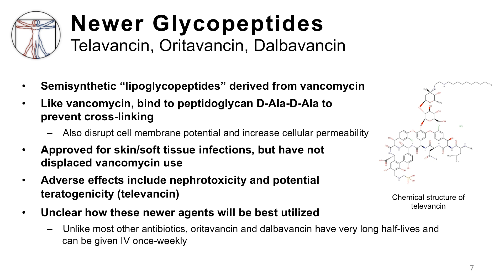They are semi-synthetic agents derived from vancomycin. Like vancomycin, they bind to the peptidoglycan D-ala-D-ala to prevent cross-linking of the peptidoglycan chains. They also disrupt cell membrane potential and increase cellular permeability. These agents are approved for skin and soft tissue infections but have not displaced vancomycin use in clinical practice. Adverse effects include nephrotoxicity and potential teratogenicity with regard to telavancin. Unlike most other antibiotics, oritavancin and dalbavancin have very long half-lives and can be given IV once weekly.